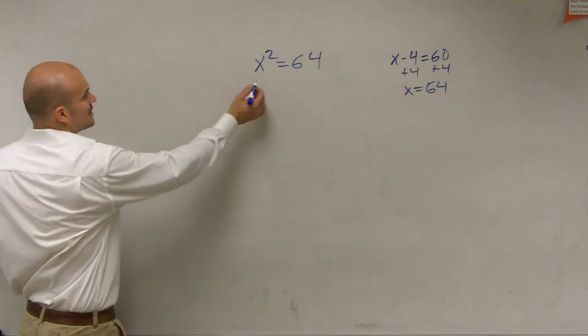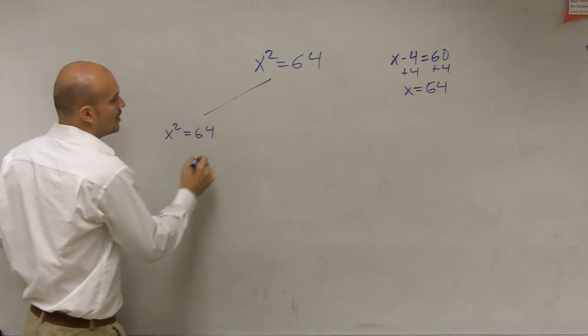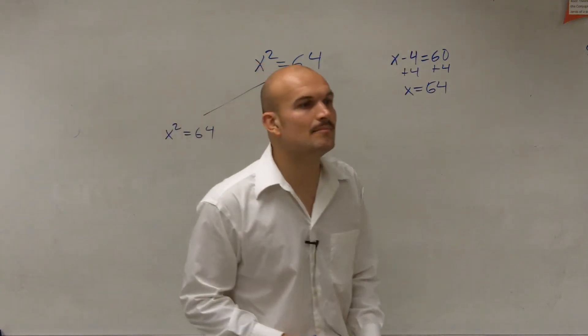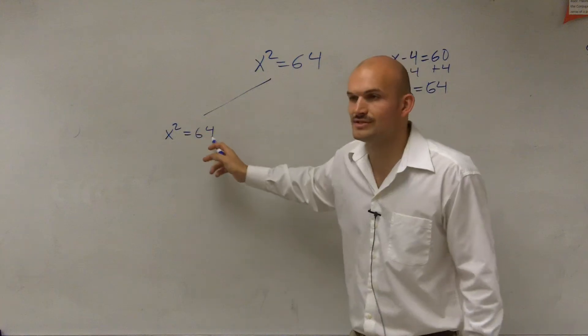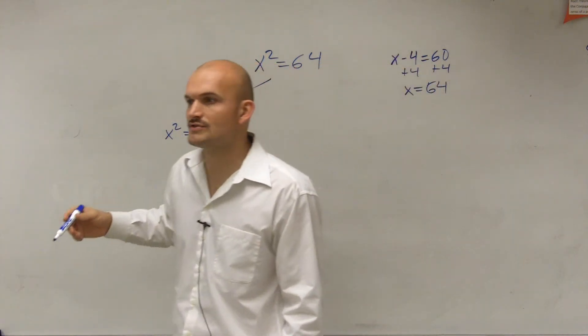So we look at this equation, and we say, what is now happening to the variable? Well, the variable is being squared. That means it's being multiplied by itself to give you 64. So does anybody know the inverse operation of squaring?